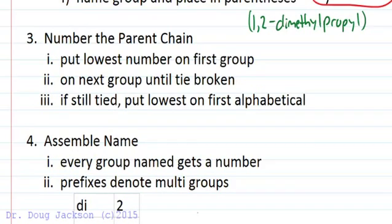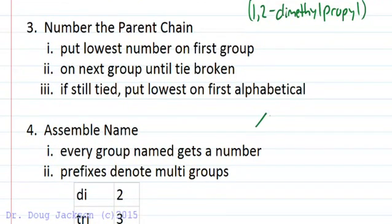Number three in the roadmap, we've circled the parent chain, we've named our groups. Number three, we number the parent chain. We put the lowest number on the first group. It doesn't matter how long the parent chain is, it's better to put a single one on a bromine on this side of the chain and have two elevens here in the name than it is to put two twos and have eleven on bromine. It's much better to name it with a lower number initially than the average number. So the lowest number on the first group possible, and then if we have a tie, we move on to the next, and if there's an absolute tie, it depends on the alphabetical order of the group names. For example, if we're numbering this chain, bromine wins, it gets the two instead of fluorine because it comes before fluorine in the alphabet.